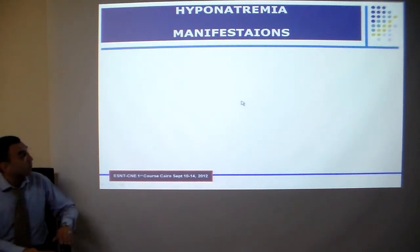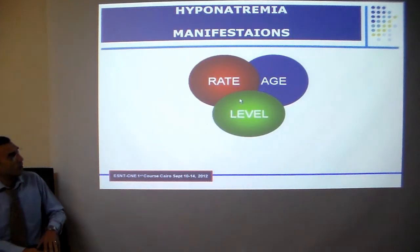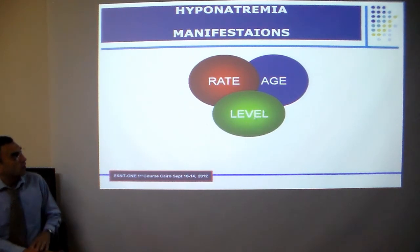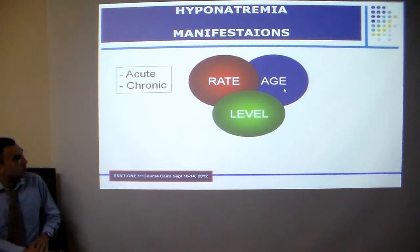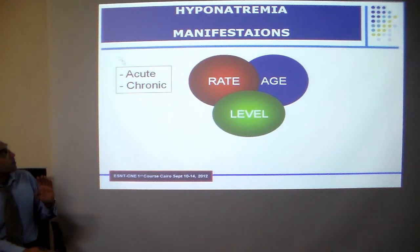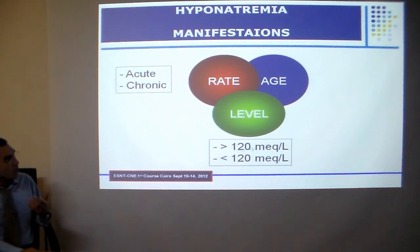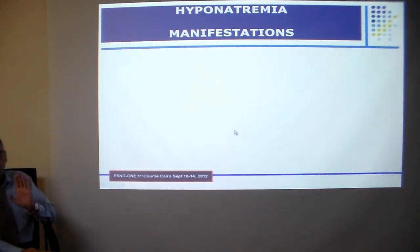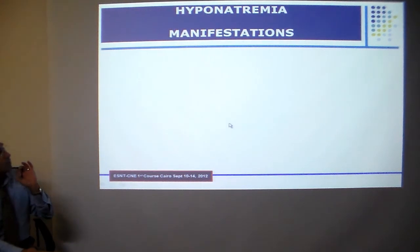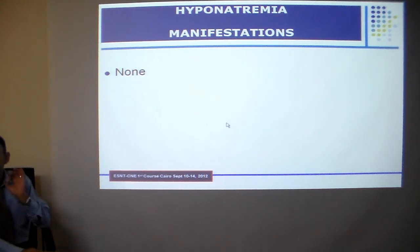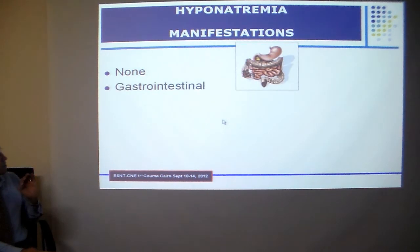The manifestations of hyponatremia will largely depend on the rate of development of hyponatremia, the level of serum sodium, as well as the age of the patient. Manifestations are much more common in acute cases than chronic cases, and occur more with low levels of sodium and in older patients. Remember that hyponatremia may be completely asymptomatic, especially in chronic cases.